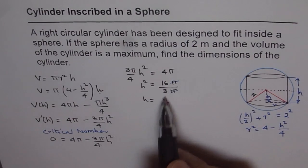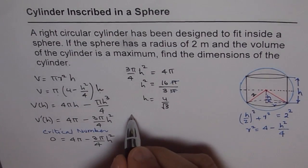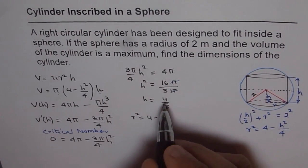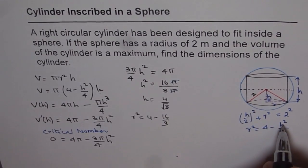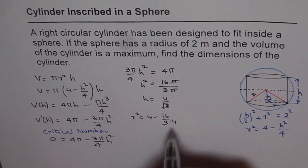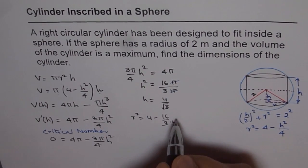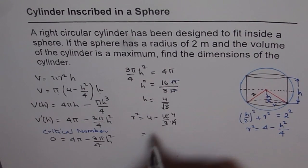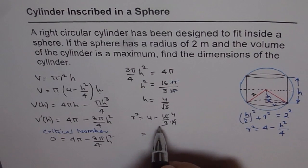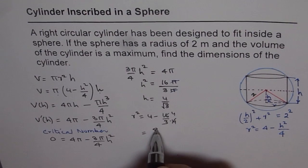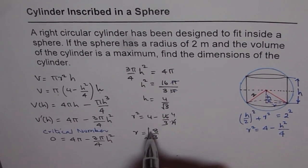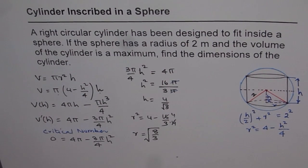We substitute h² = 16/3 to find the radius. We have r² = 4 − (16/3)/4. Simplifying: 4 times 3 is 12 and 12 − 4 is 8, so we get r² = 8/3 and r = √(8/3). That is how we get height and radius for this critical number.